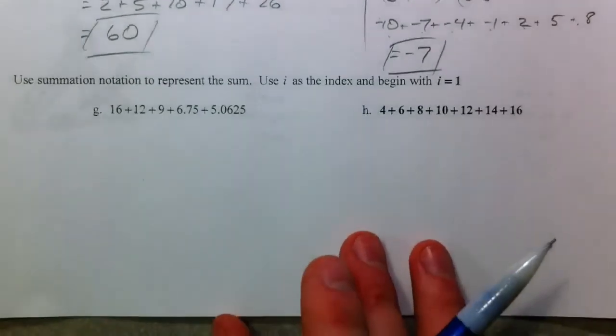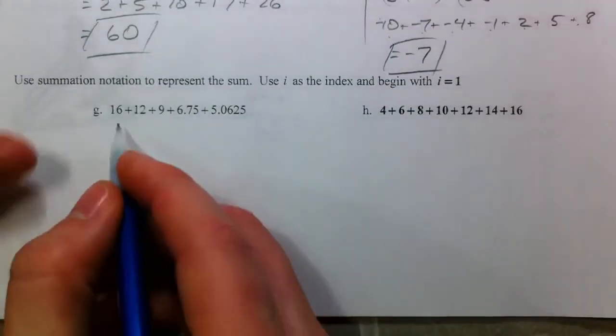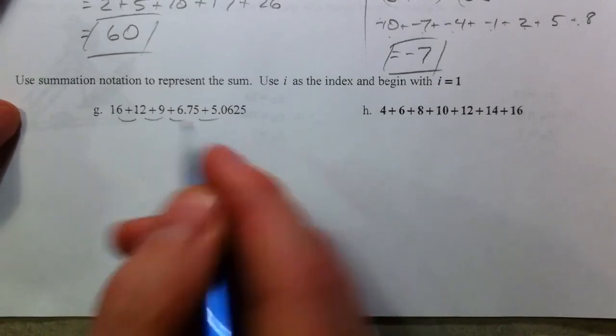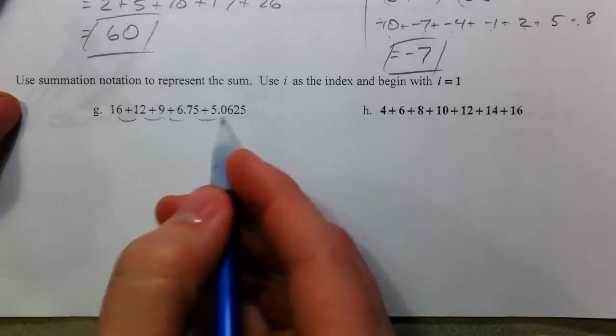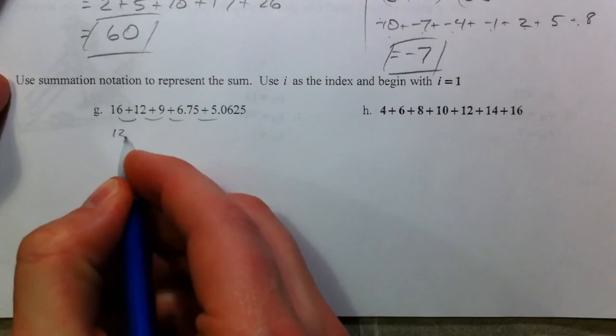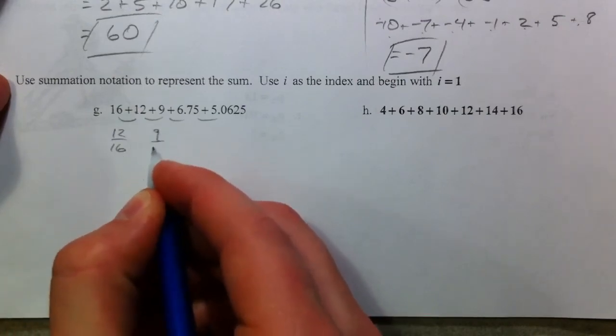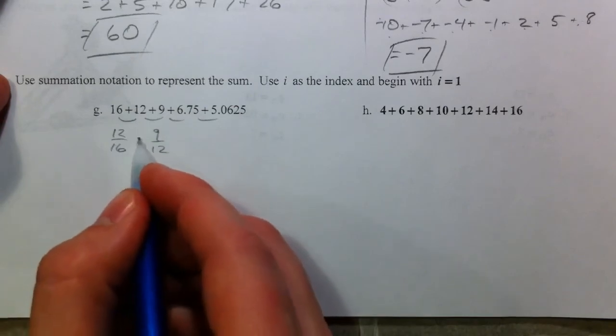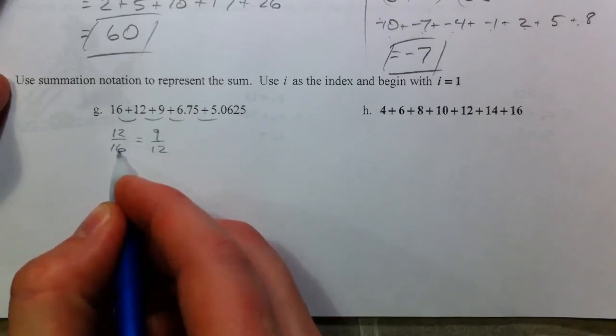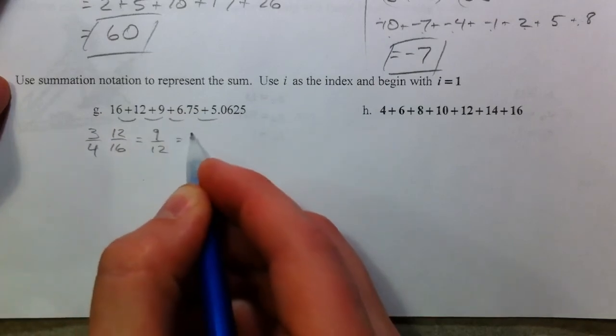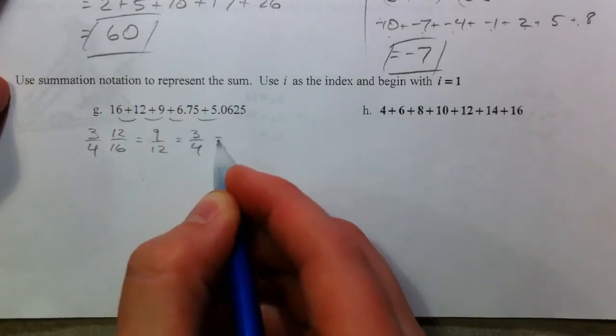Using summation notation. So, what we notice about all of these is that they aren't adding the same amount each time because we become decimals. And so, what I start looking at is, is the term divided by the term in front of it the same thing every single time. 12 over 16 is 3 fourths.